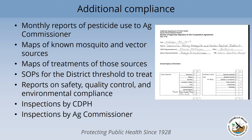Sometimes a place that was a source in one year was not treated the following year because it wasn't a source that year, so we have two different sets of maps for that. We need to include all of the standard operating procedures for our district thresholds — for instance, when you go to do larval dips in a duck club pond, there's a threshold of how many mosquitoes should be in your dips before you make a treatment. In this annual review, there's a report on our safety procedures and anything that took us away from being safe, a report on quality control and all of the evaluations that group does, and a report on environmental compliance — for instance what we did with NPDES or other issues that may have come up.